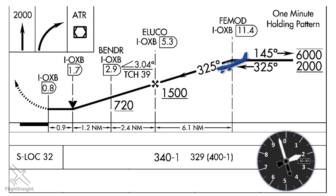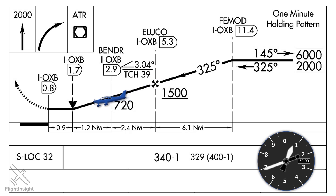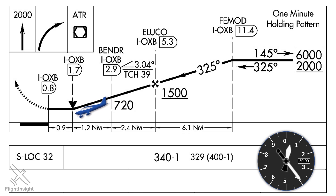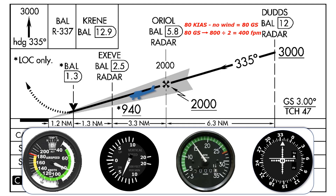A non-precision approach, like a VOR, requires holding a step-down altitude until the final approach fix, then descending to any other step-downs, arriving at the minimum descent altitude, and executing a missed approach at a missed approach point. A precision approach, like an ILS, has us holding glide slope-intercept altitude until picking up the glide slope, then following that down to a decision altitude, where we'll decide whether to go missed or not, and then execute that missed if needed.